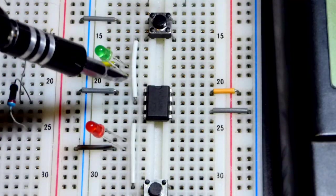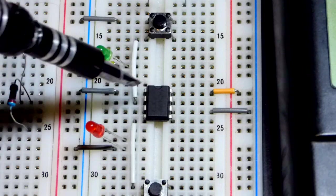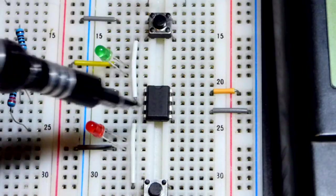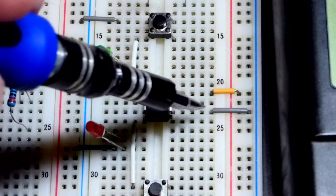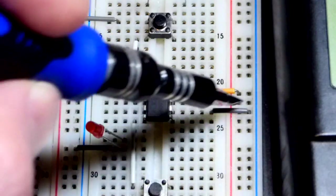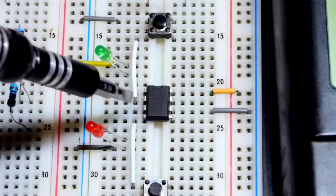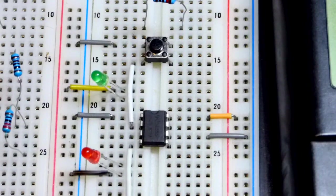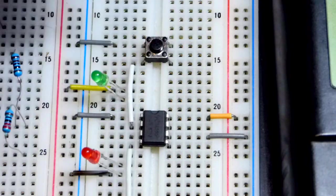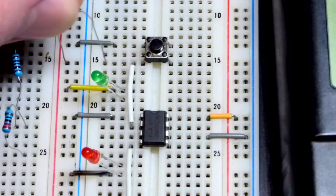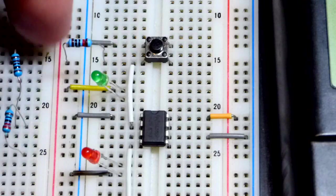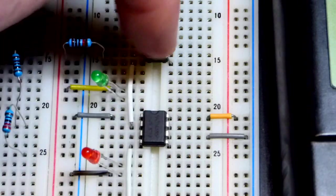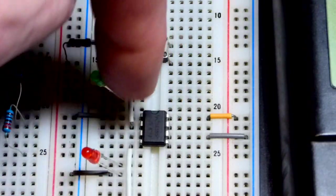Here's the NE555. Pin one to the negative supply, pin number eight to the positive. Pin number six, the threshold pin, we have to the negative rail so it doesn't do anything. Pin two we have running up to the bottom of a switch. You can see the other side of the switch is to the negative supply. We're going to take a 10 kilo ohm resistor and put that to the positive supply so that we have five volts until we press the button, then we will have zero volts at that pin.